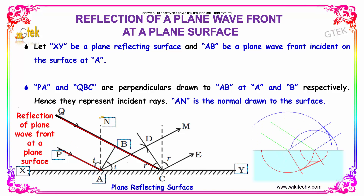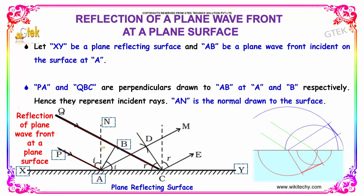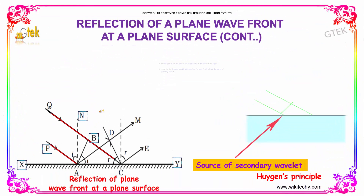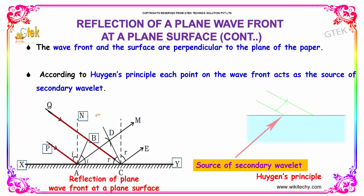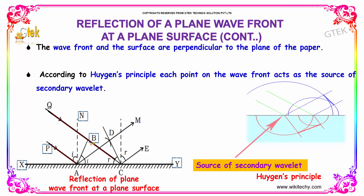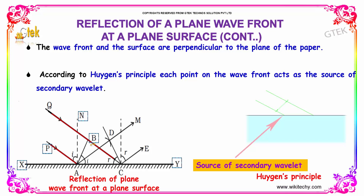AN is the normal drawn to the surface. The wavefront and the surface are perpendicular to the plane of the paper. According to Huygens' principle, each point on the wavefront acts as the source of a secondary wavelet.